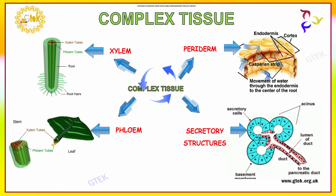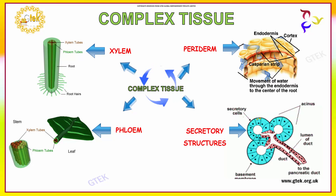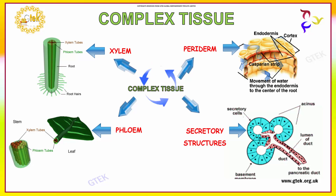In phloem, here is the phloem tube and xylem tubes — it has both of them. In the secretory structure, it has a basement membrane and a duct, along with secretory cells on the outer surface. This is called acinus. Here again is the periderm — inside the periderm are the casparian strips, which are used for the movement of water through the endodermis to the center of the root. This is the endodermis and this portion is called cortex.